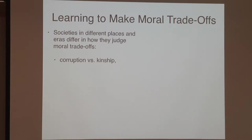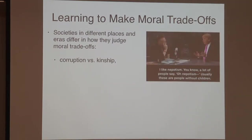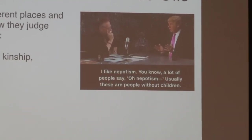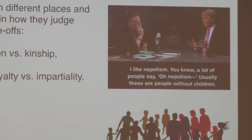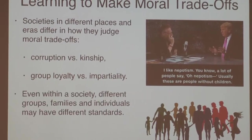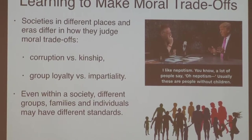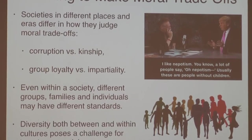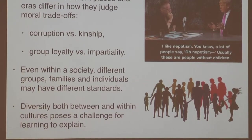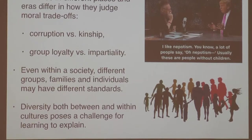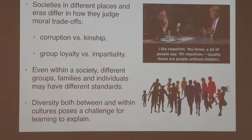In other societies, nepotism might be seen as a moral obligation — what kind of a monster would hire a stranger instead of their brother? Trump said 'I like nepotism — a lot of people who say that are people without children.' You can see this wide variety of moral values even within a particular place. Different values of group loyalty versus impartiality are very relevant today. Because of this large-scale diversity both within and across cultures, this is a challenge for learning. It means we most likely do not have an innate sense of how one should make these trade-offs — we have to learn it in a culturally appropriate way.